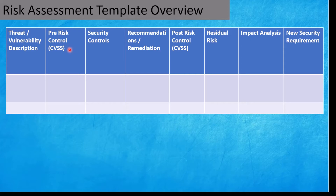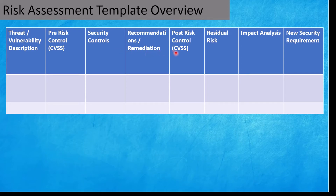Once we identify the threats — whether critical, high, medium, low, informational, or none — we need to provide security controls to mitigate the risk, along with recommendations and remediations. Then for post-risk control, once we identify the controls and remediations and implement them, we calculate what the risk rating will be. Sometimes, due to external component limitations or other reasons, we may not be able to fix an issue. In that case, the issue remains open and we update it in the residual risk category.